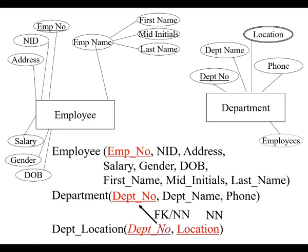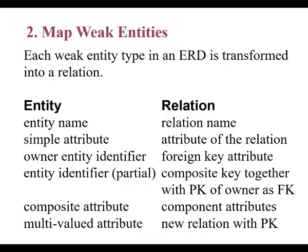They're indicating that department location needs to be a separate table. What happens is you have a foreign key not null to the department number, so that every department location is associated with a department — that way if you need to find the department, you know where to look.